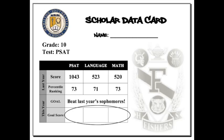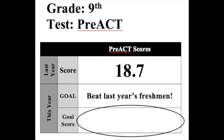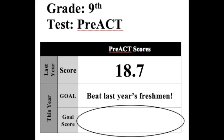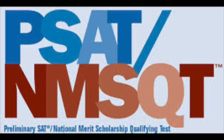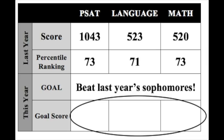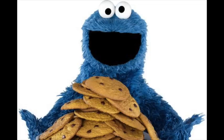Sophomores and freshmen, your data cards show last year's averages — the averages of last year's sophomores and last year's freshmen on the PSAT and pre-ACT, respectively. If you beat the average of last year's sophomores or freshmen on whatever test you're taking, you receive the free dessert.